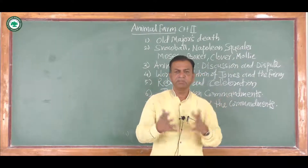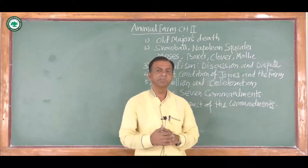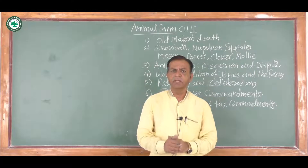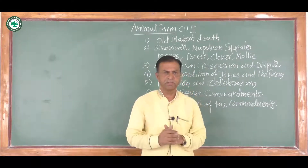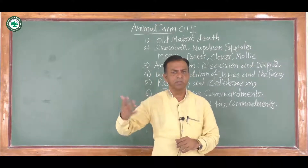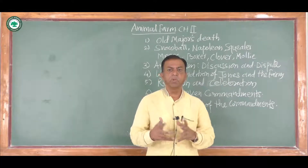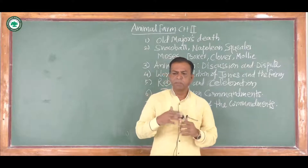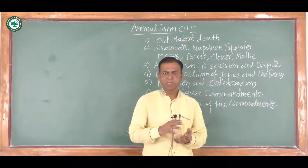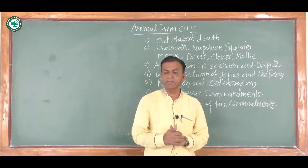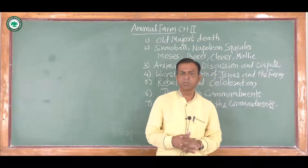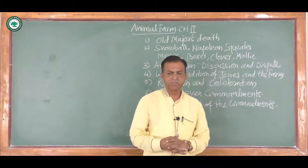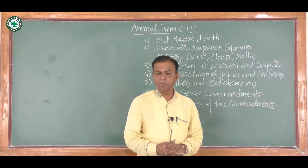The first character described is Snowball. He was bred by Jones for sale. He has a vivacious or gay appearance, he is very quick in speech, very intelligent, a good orator, and more inventive.